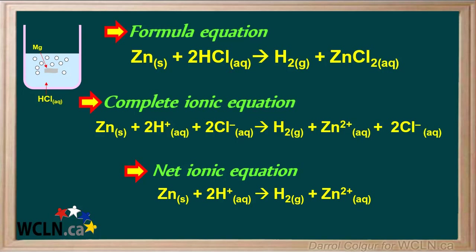In summary, all three forms of this equation are useful in their own way. The formula equation shows the molecular formulas for the reactants and products, as well as their states, but does not show individual ions. The complete ionic equation — sometimes called the total ionic equation — shows all the individual ions present in the reaction, as well as any other species, including spectator ions on both sides.